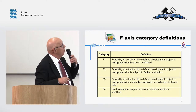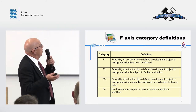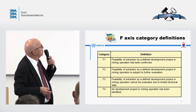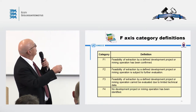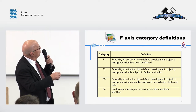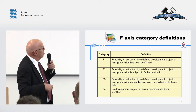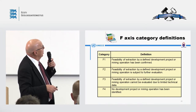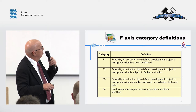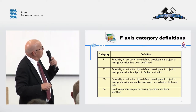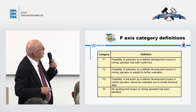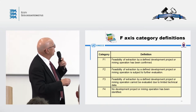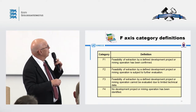The F-axis definitions are also in straightforward language with no technical terms. F1 means the feasibility of extraction by a defined development project has been confirmed, and the mining operation is confirmed. F2 is subject to further evaluation — there are contingencies that need to be resolved, which could be technical. F3 means the feasibility of extraction cannot be evaluated due to limited technical data, which applies very early in exploration. F4 is restricted to what is left in the ground when you start doing your project.